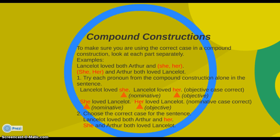Let's look at compound construction. It's easy to make sure you're using the correct case — here's how. You look at each part separately. For example: "Lancelot loved both Arthur and she or her?" And: "She or her and Arthur both loved Lancelot." Deconstruct the sentence and use each pronoun alone. Would we say "Lancelot loved she" or "Lancelot loved her?" She is nominative, her is objective — the only one that makes sense is the objective case, her. Now the next: "She loved Lancelot" or "Her loved Lancelot?" That's pretty obvious — it's she, which is the nominative case.